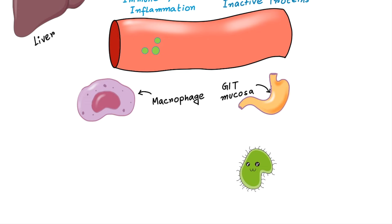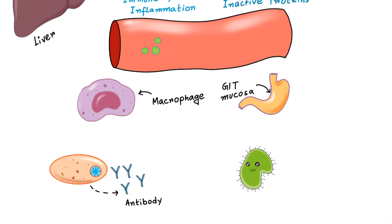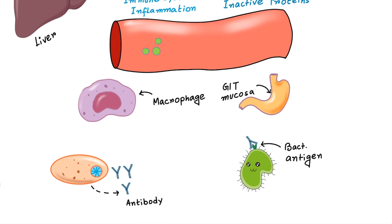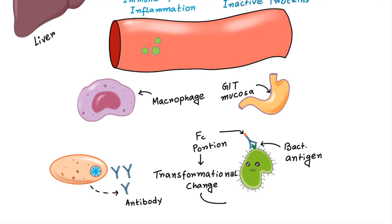Suppose bacteria enters our body and the humoral system is activated and an antibody is produced against the bacterial antigen. The antibody binds with that antigen, and as soon as it does, there is a conformational change of the FC portion or tail region of the antibody. The transformed FC portion has the capability to activate the complement system. Antibodies circulating in the blood cannot activate the complement system — to do so, they must first bind with an antigen.